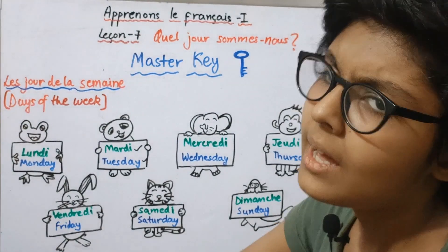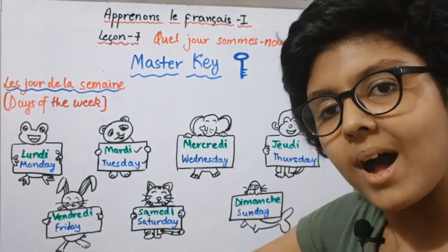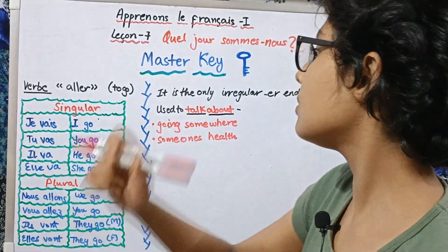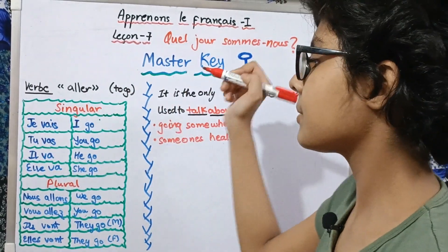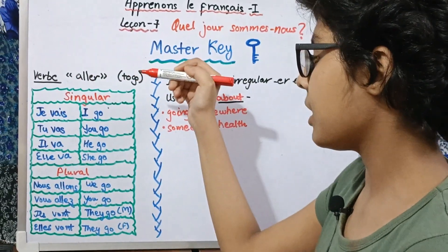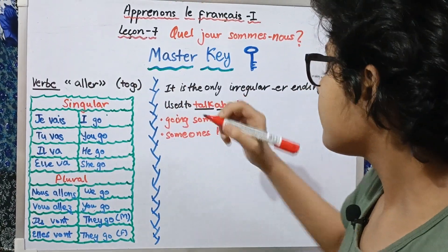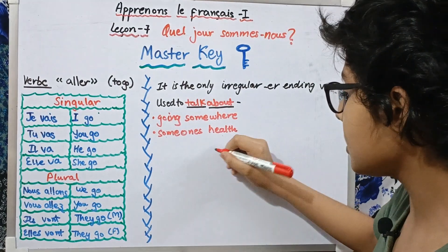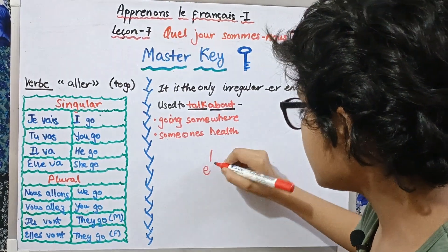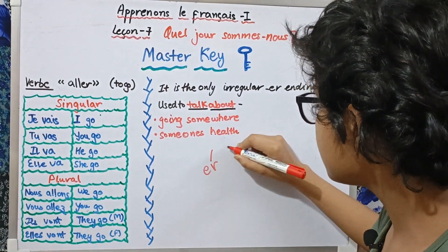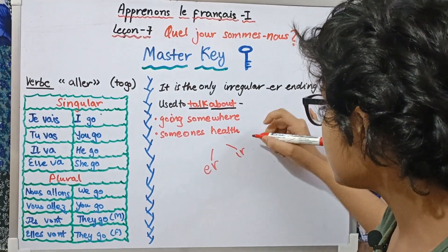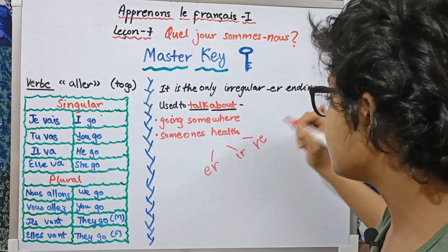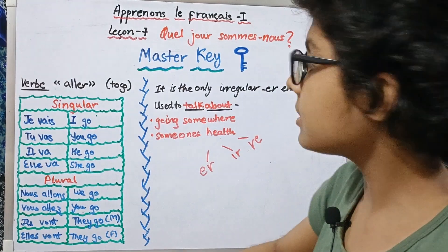Now let us go on to the verb aller. This is our next topic in Lesson 7 Master Key. First things first: verbs are divided into three groups — the ER group, the IR group, and the RE group — and the division is done according to the two letters in which they end.